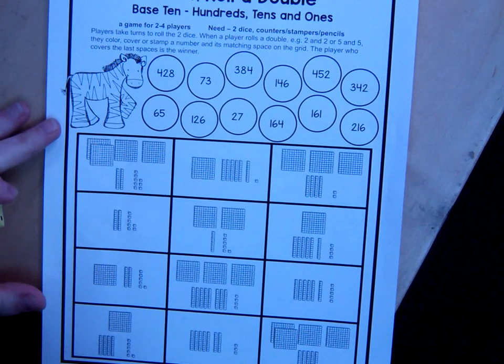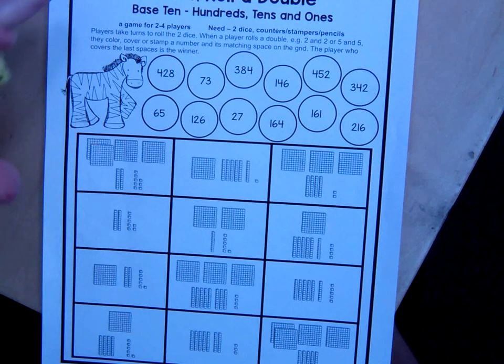Okay, first grade. The name of this game is Zebra Roll a Double. You should be in your level four game two.